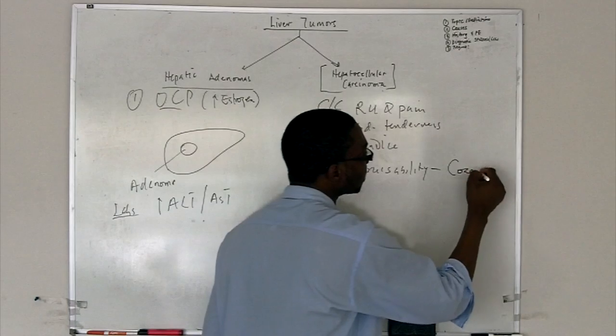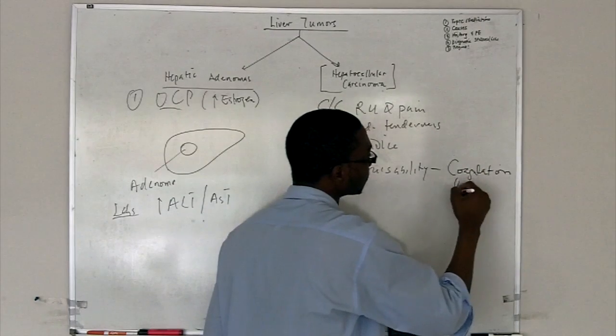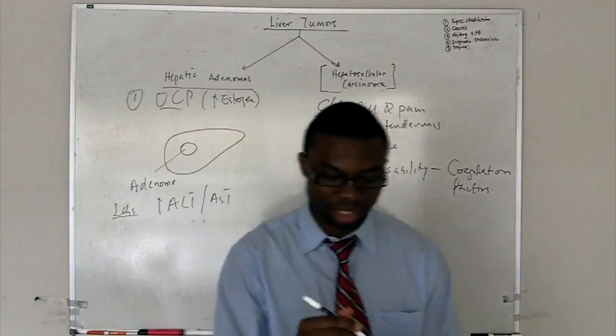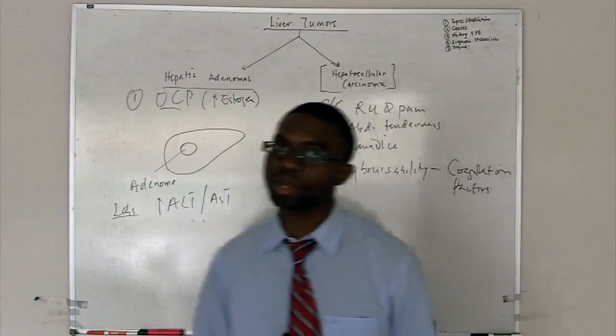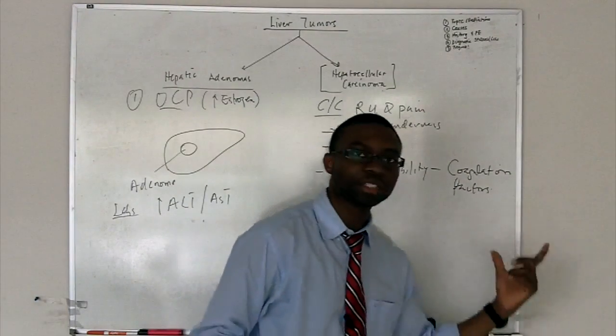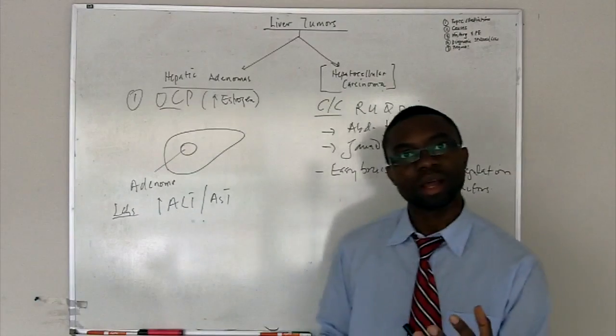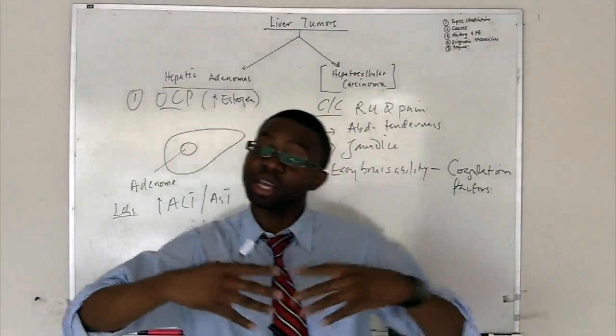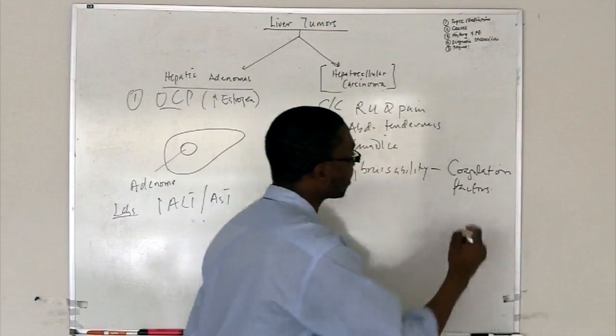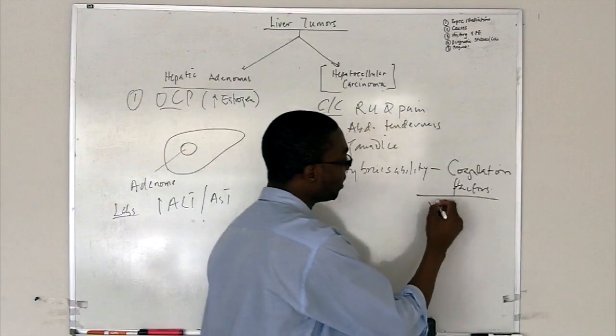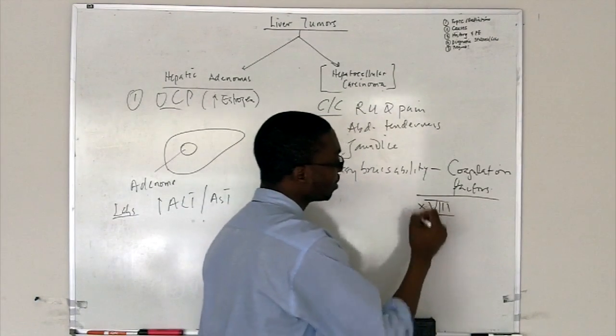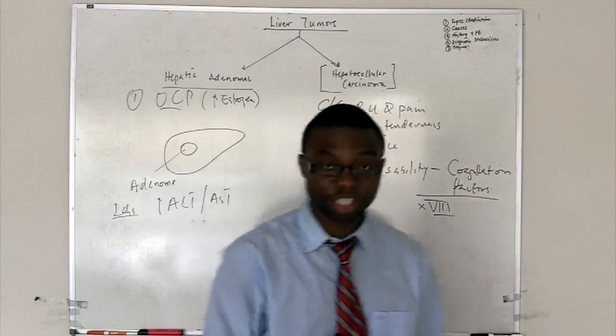That is the job of the liver. It makes coagulation factors. If you haven't understand the coagulation cascade, go back to the lecture. I already made one. Coagulation factors are needed for you to clot so you can form a nice fibrin clot. If you don't make coagulation factors, except factor VIII, everything else except factor VIII is made by the liver.